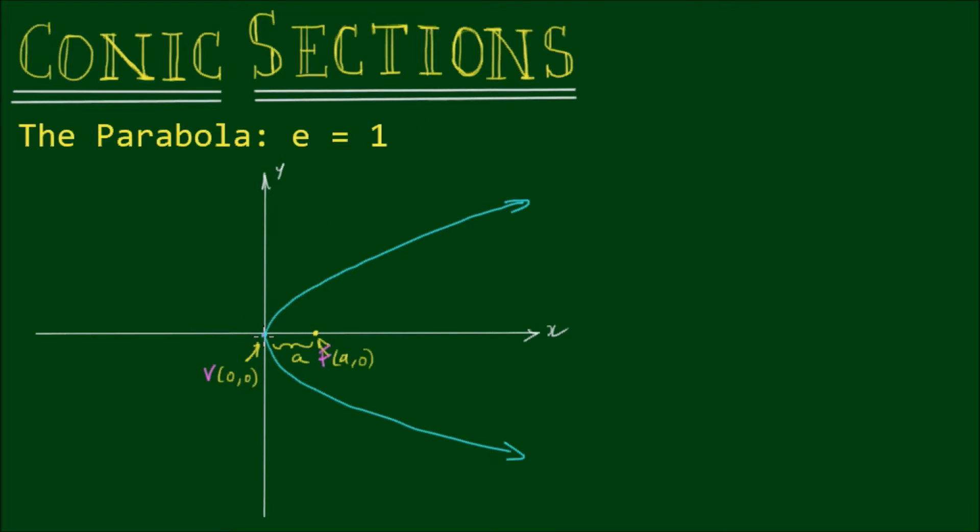So if the point at the vertex has a distance of a to the focus, it must also have a distance of a to the directrix as well. And we can see that the directrix is going to be directly to the left of the vertex. I'll label this as D for directrix. And it has the equation x equals minus a. So the distance here is also a.